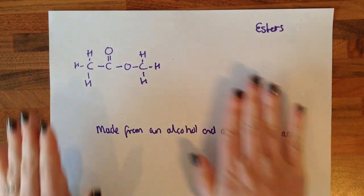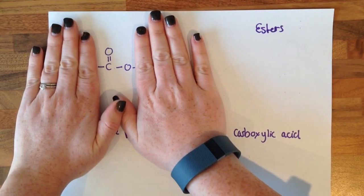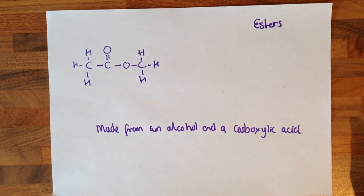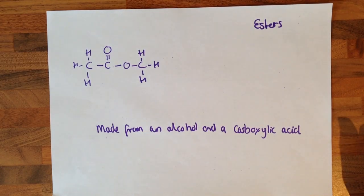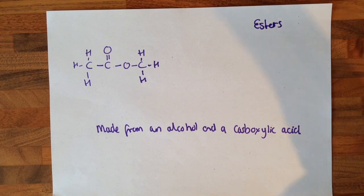The last one you need to know is an ester. That is your functional group for an ester. The only one you need to know is ethyl ethanoate, and it can be made from an alcohol and a carboxylic acid.